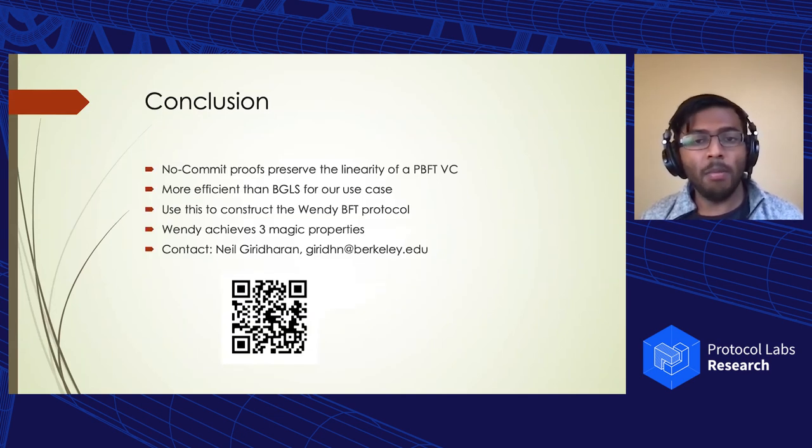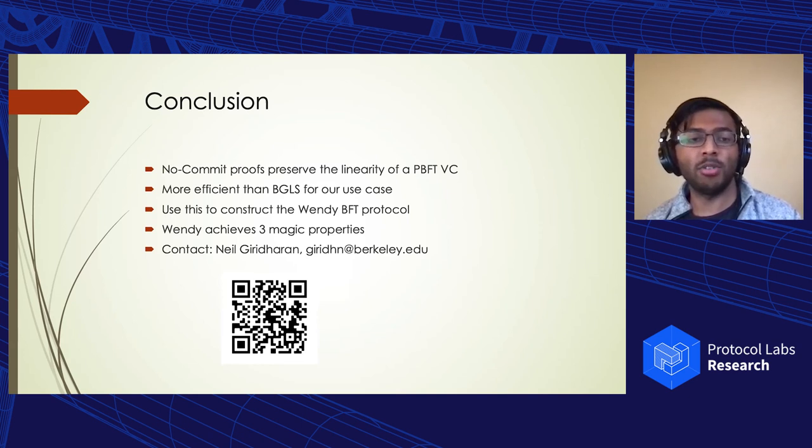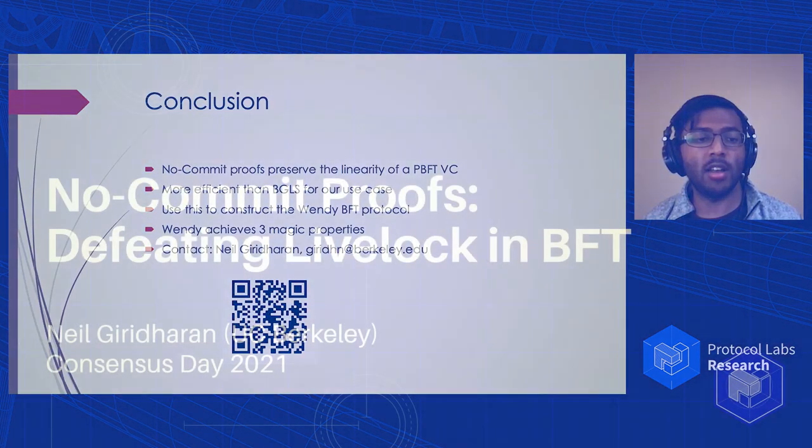And so to wrap up, I just want to conclude that we came up with this no-commit-proof construct, which summarizes the information in a PBFT view change using just one authenticator. The scheme is much cheaper than the BGLS aggregate signature scheme we compare against since we leverage multi-signatures. We then use this gadget to construct a new BFT consensus protocol that's very similar to HotStuff that achieves the three major properties that we care about. And yeah, you can check out the paper for more details using the QR code.